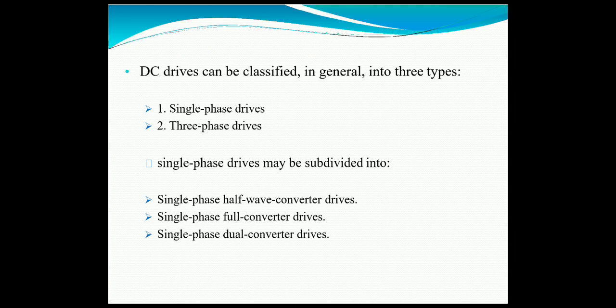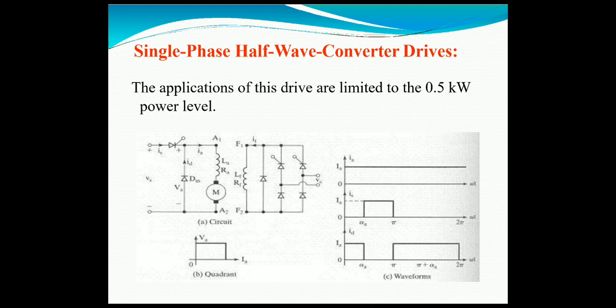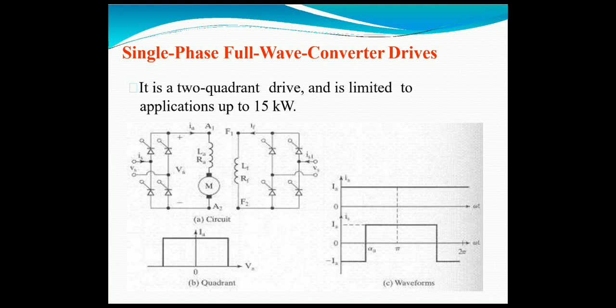In these drives, the AC supply is converted into DC supply with the help of a rectifier section, and the drive is driven with the given supply. The single-phase half converter drive diagram is shown here and will be discussed in upcoming lectures. It operates in the first quadrant only. The single-phase full-wave converter drive is a two-quadrant drive, limited to applications up to 15 kilowatts.